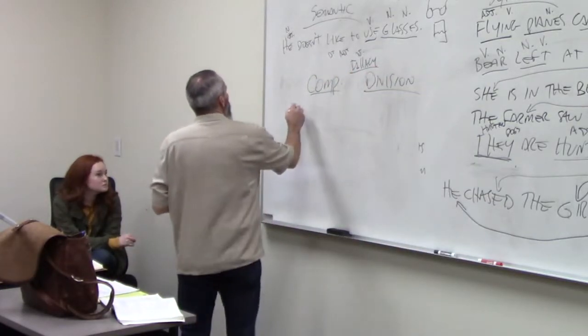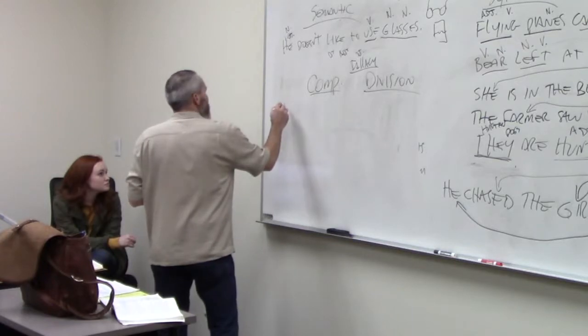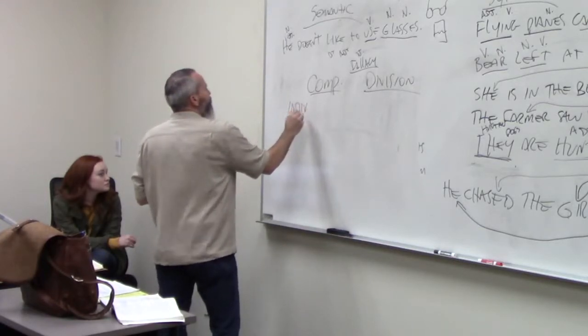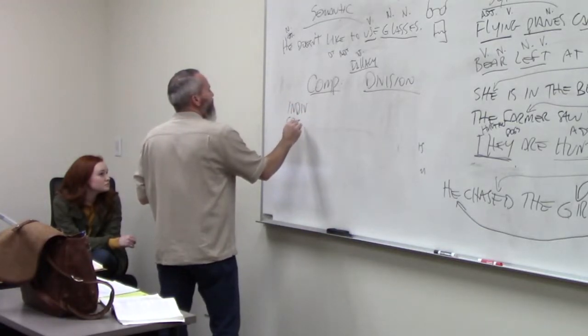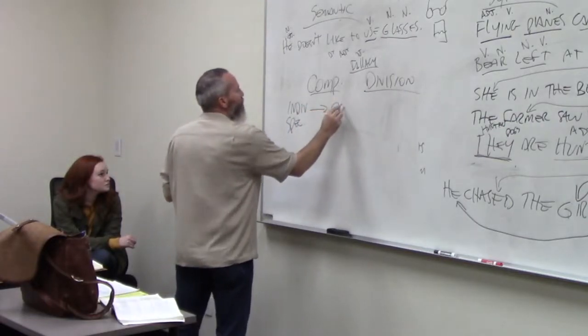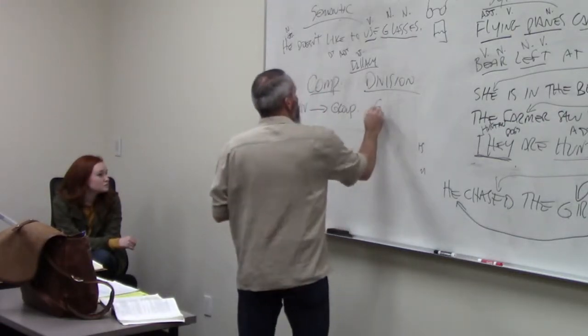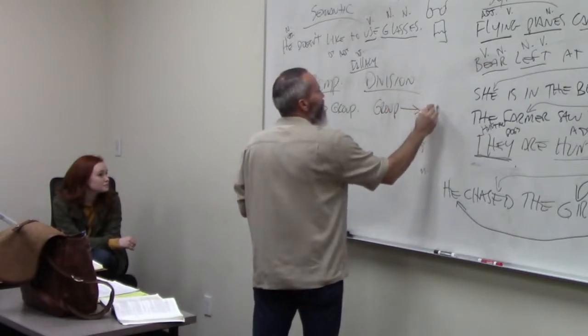The fallacy of composition is when you go from an individual or specific thing to a group. Division is when you take a group of things and you go to the individual.